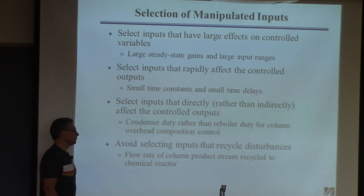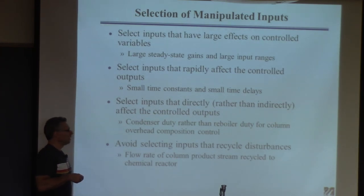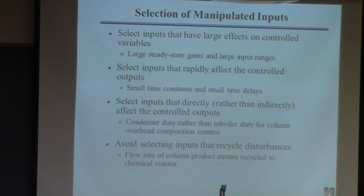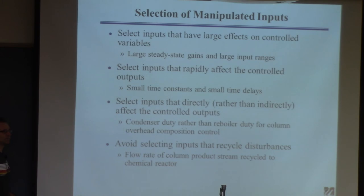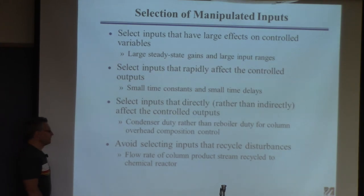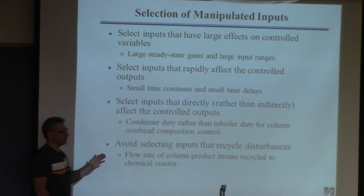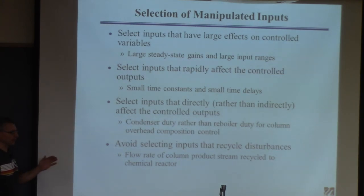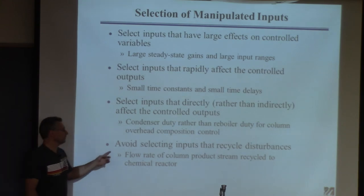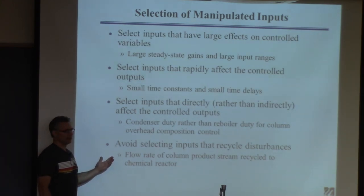Avoid selecting inputs that recycle disturbances. When you do a reaction, you usually get incomplete conversion, so you send the reactor output to a column to collect product and unreacted reactants, which are recycled back to increase yields. But if there's a disturbance coming out of the reactor, it propagates to the column, into the recycle stream, and back to the reactor — potentially amplifying because you've created feedback in the process. From a control perspective, you'd rather not do this, though from an economic perspective you often have to, so just be aware.